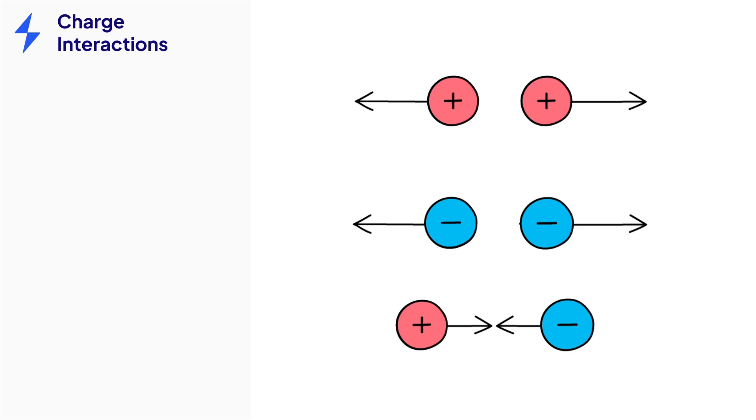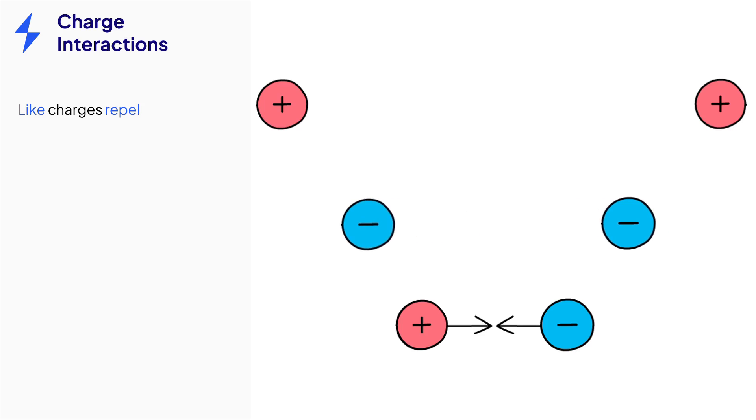When charged particles interact they follow two simple rules. Like charges repel. So two positively charged particles brought into close proximity will experience a force of repulsion. The same goes for two negative charges, such as electrons.